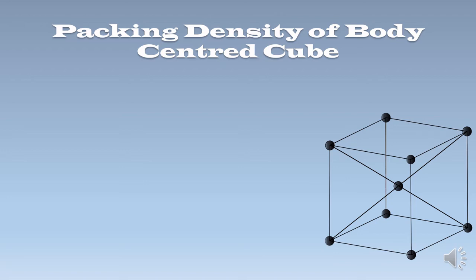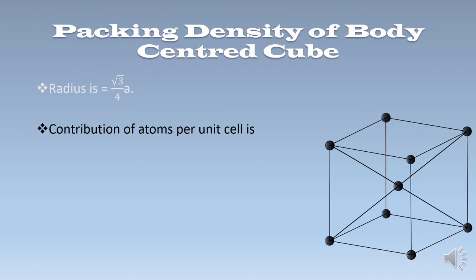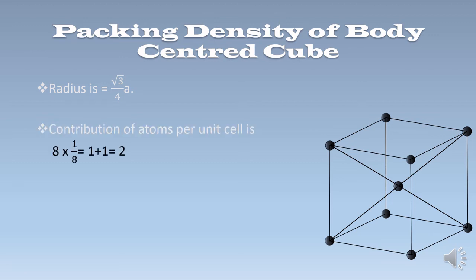We see here that 8 corner atoms are present and 1 body-centered atom is also present. The radius of the body centered cube is √3/4 × A. The contribution of atoms per unit cell: 8 corner atoms × (1/8) = 1, plus 1 body-centered atom, giving a total contribution of 2 atoms per unit cell.